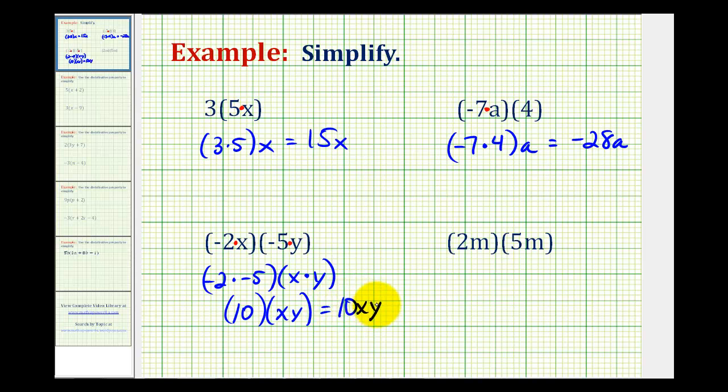And for the last example we have 2m times 5m, or 2 times m times 5 times m. So we can write this as 2 times 5 times m times m. Well 2 times 5 is 10, and m times m is m to the second or m squared. So this would be 10m squared.